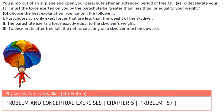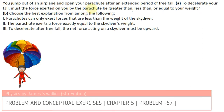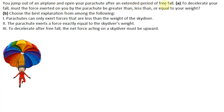In this question, you jump out of an airplane and open your parachute after an extended period of freefall. When you were in freefall, the only force exerted on you was the gravity force mg. The question asks: to decelerate your fall, must the force exerted on you by the parachute be greater than, less than, or equal to your weight?